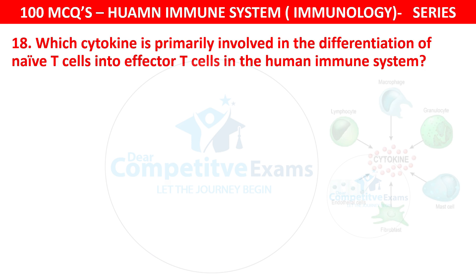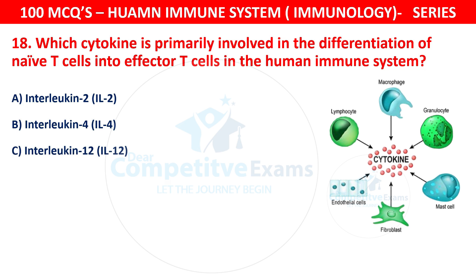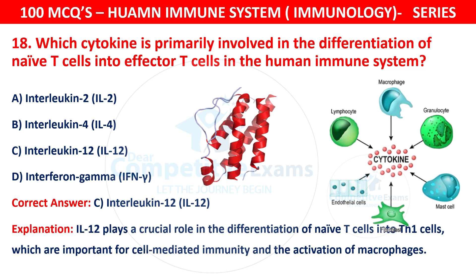Question 18. Which cytokine is primarily involved in the differentiation of naive T cells into effector T cells in the human immune system? Your options are Interleukin-2 (IL-2), Interleukin-4 (IL-4), Interleukin-12 (IL-12), or Interferon-Gamma (IFN-γ). The correct answer is Interleukin-12, IL-12. IL-12 plays a crucial role in the differentiation of naive T cells into TH1 cells, which are important for cell-mediated immunity and the activation of macrophages.